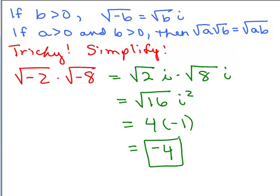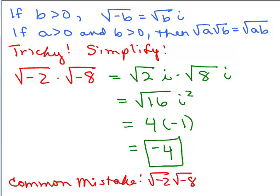The most common mistake is saying that square root of negative 2 times square root of negative 8 equals square root of 16, which is 4. This is wrong — you cannot do that. It's actually equal to negative 4.